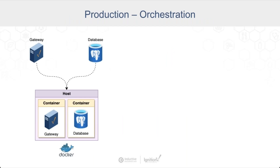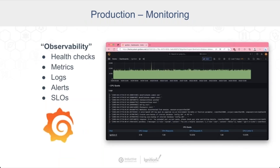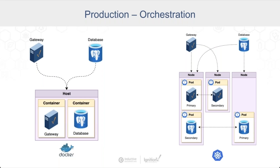The next topic is orchestration — picture a conductor orchestrating an orchestra. The examples so far are all running on a single host: a single Ignition gateway and a database on one host running Docker. That works really well for development and testing. Now let's say we want a more complicated example with those same two services but we want to add high availability and redundancy.